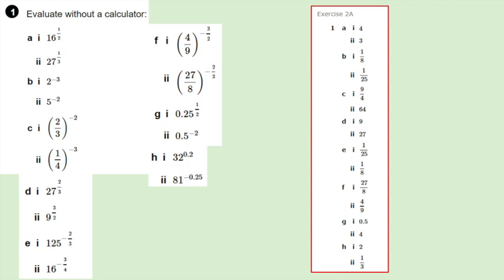Part G1: the square root of 0.25 — it's easiest to rewrite 0.25 as a quarter, so we want the square root of a quarter, which is a half or 0.5. Part G2: 0.5 or a half to the power of negative 2 — a half squared is a quarter, and taking the reciprocal gives 4. Part H1: 32 to the power of 1 fifth, or the fifth root of 32, is 2. Part H2: 81 to the power of negative a quarter — the fourth root of 81 is 3, so the answer is 1 over 3.